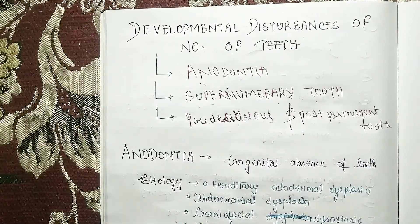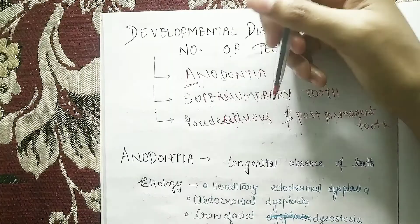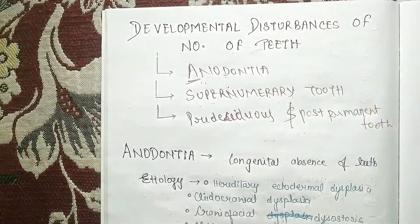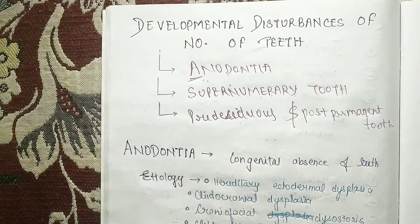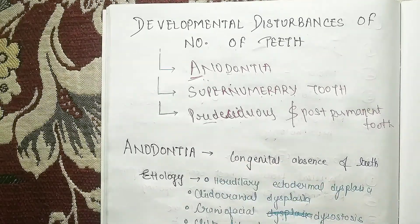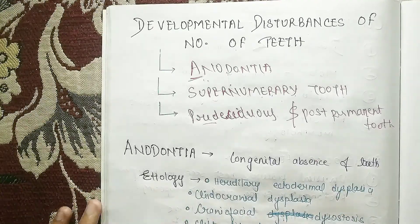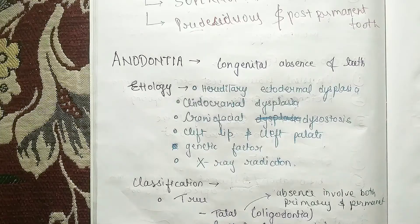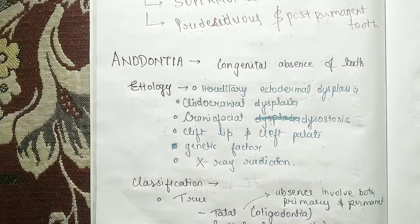Coming to anodontia — anodontia means the congenital absence of tooth. Now we are going to cover anodontia as the main topic of today's video. So it means congenital absence of tooth.